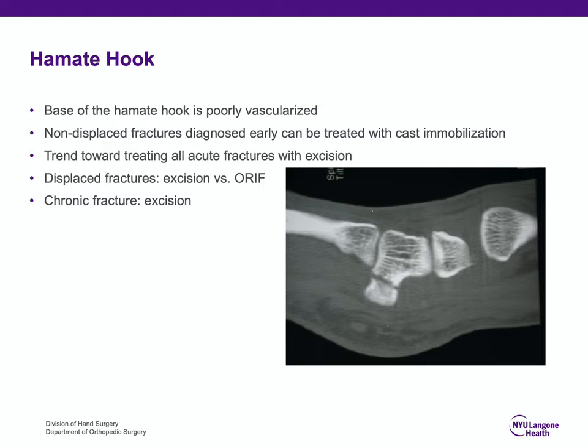Because of the complexity of that cast, there has been a recent trend towards treating all acute fractures — and even chronic displaced or non-displaced fractures — with excision. Even patients evaluated 7 to 10 days after injury with a CT scan demonstrating a non-displaced hamate hook fracture: the current treatment is excision, because patients recover quite quickly without any immobilization postoperatively. Casting is no longer the primary treatment for a hamate hook fracture.